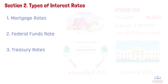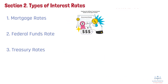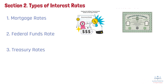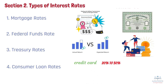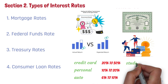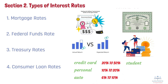Treasury rates are the interest rate on government bonds, considered essentially risk-free investments. A 10-year treasury bond might offer around 4.5%, which is considered a benchmark for low-risk investments. Investors use these rates to compare potential returns on riskier investments. Consumer loan rates include credit card rates, which often range from 20% to 30% annually; personal loans, typically priced between 10% and 20% depending on credit score; auto loans, around 6% to 10% for borrowers with good credit; and student loans, with federal loans around 5% to 7% and private loans reaching up to 13% to 14%.